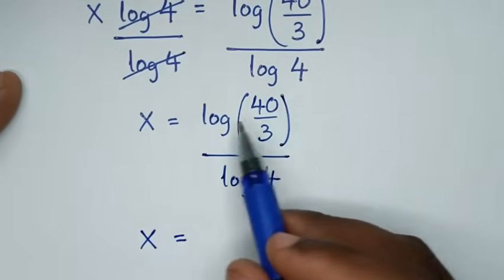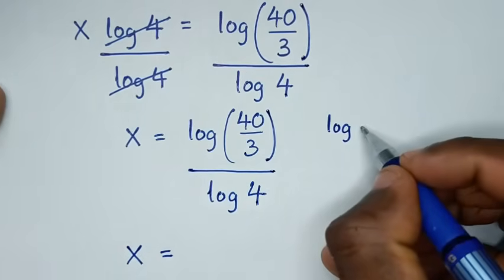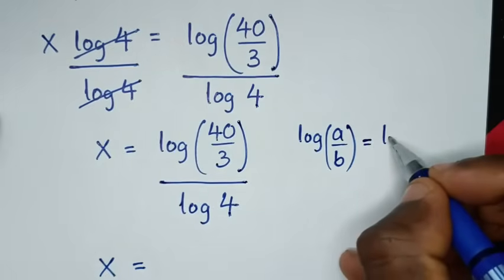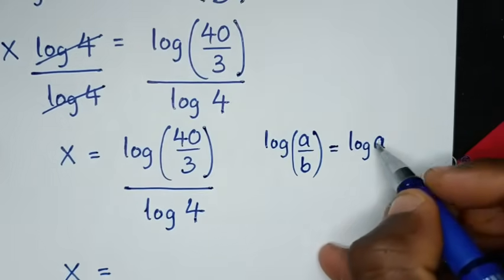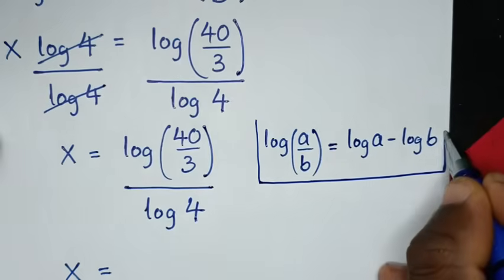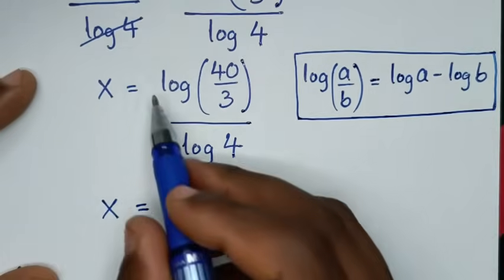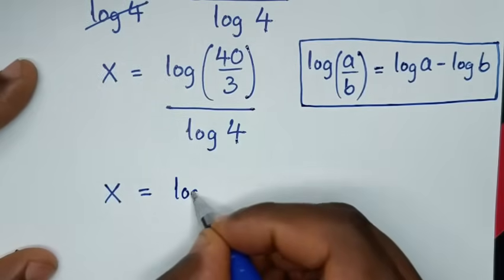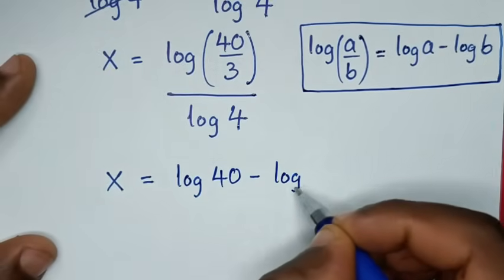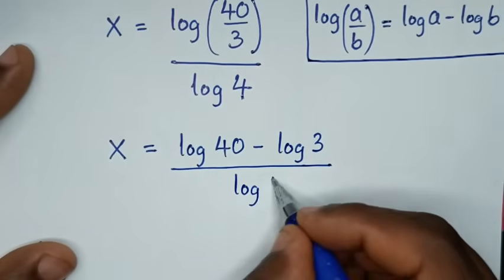The expression log(40/3) is in the form log(a/b), which equals log(a) − log(b). Applying this rule gives us log(40) − log(3), all over log(4).